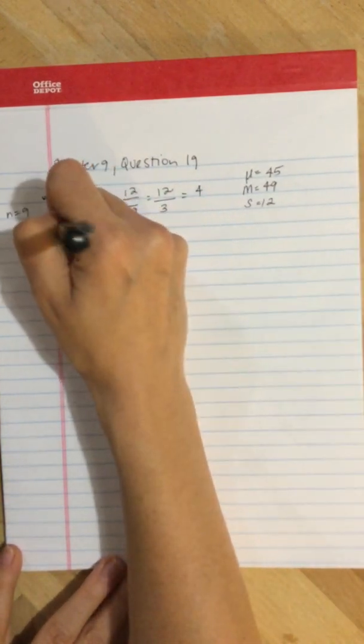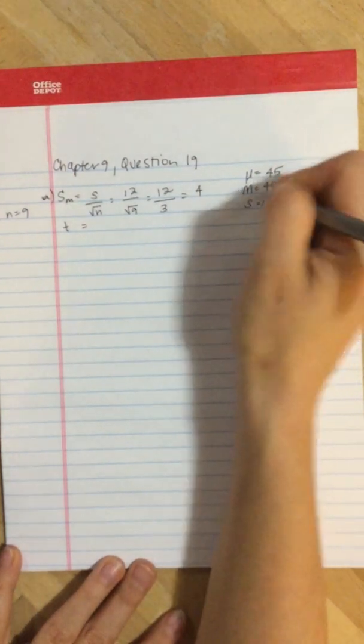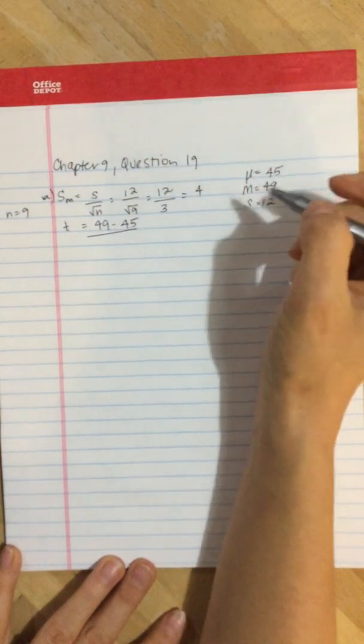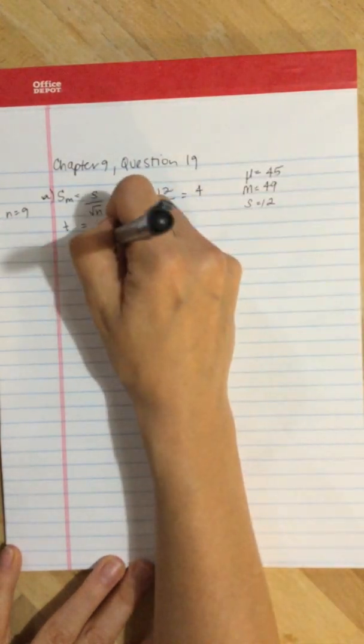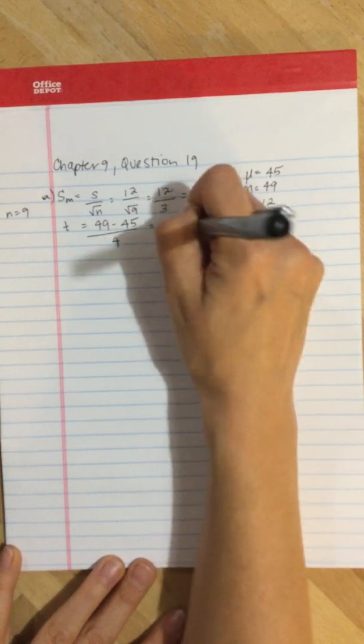Now, we plug that into our t. We take 49 minus 45 and divide it by the estimated standard error, which is 4. So, we get 4 divided by 4, which equals 1.